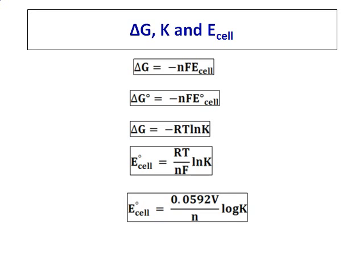So combining the two, you will get an equation for E cell and K. And when you substitute the values for RT at standard condition and Faraday and converting the ln to log, I can write E° cell as 0.0592 volts divided by n, where n is the number of electrons, log K.